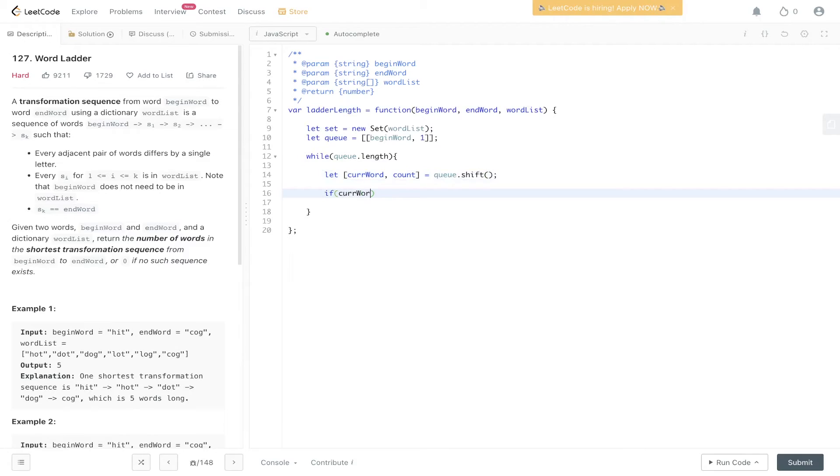If current word is equal to end word we can return count. So if we found the end word we can just return the count. And this is where we have to look at each individual character and update it with every character from a to z.